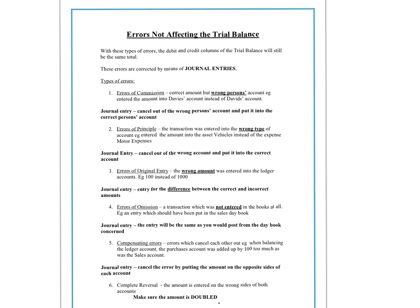The first thing to point out is that you need to remember that these names — Error of Commission, Principle, Original Entry, Omission, Compensating, and Reversal — are only used to describe an error that does not affect the trial balance. So if you find an error that does affect it, you shouldn't really be using these names when you correct them in the journal.